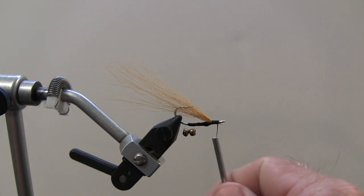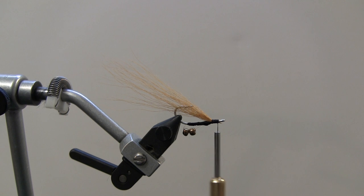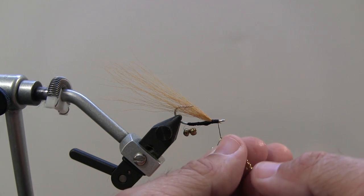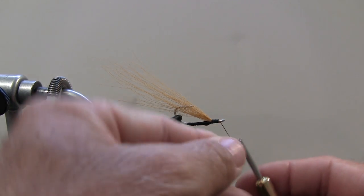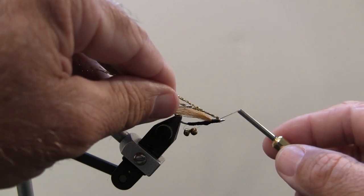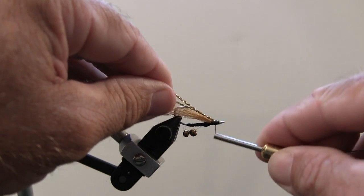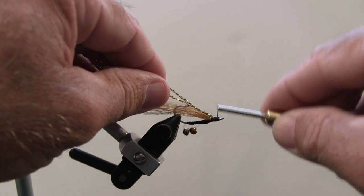The final thing I'm going to add is a little bit of flash material. For this one I'm going to use gold. I find this is a good shrimp imitation fly for redfish and trout around here. I'm going to fold that around the thread, bring it up just behind the eye, wrap that in so it lays on top of the wing.